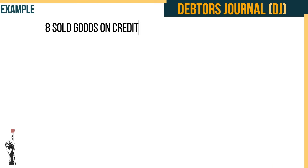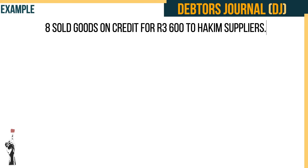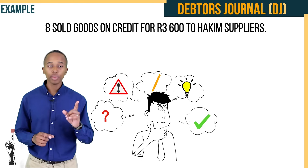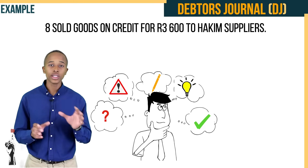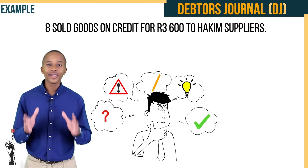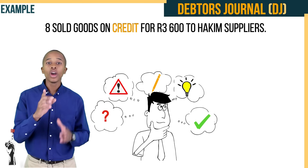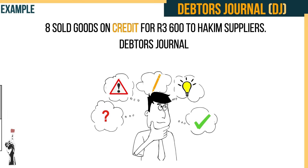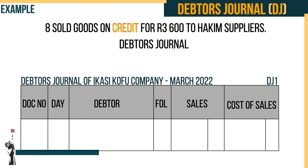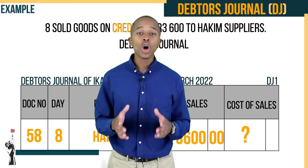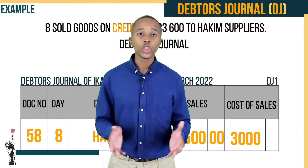Let's look at another example: sold goods on credit for R3,600 to Hakim Suppliers. Before we rush in, stop, evaluate, and look at the key words. The word 'credit' means this should be recorded on the debtor's journal. The previous invoice number was 57, so this one will be 58. Then record the date, debtor's name, and sales column.